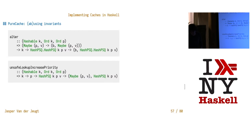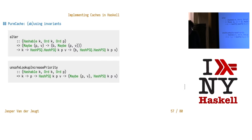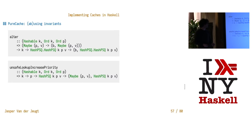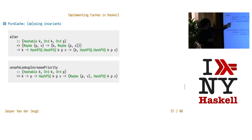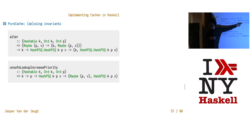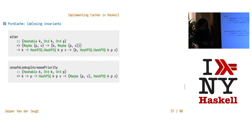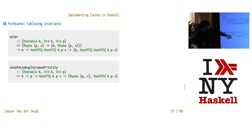So you can shoot yourself in the foot in many different ways — we already saw unsafe map monotonic for when we reached the max bound. There are plenty of unsafe functions to make micro-optimizations. This is what our final interface looks like for the pure version. Now we can make an impure version using IO — I'm going to call it SimpleCache. Most of the time if you're using these kind of caches in a server or backend, you want to be able to deal with IO.